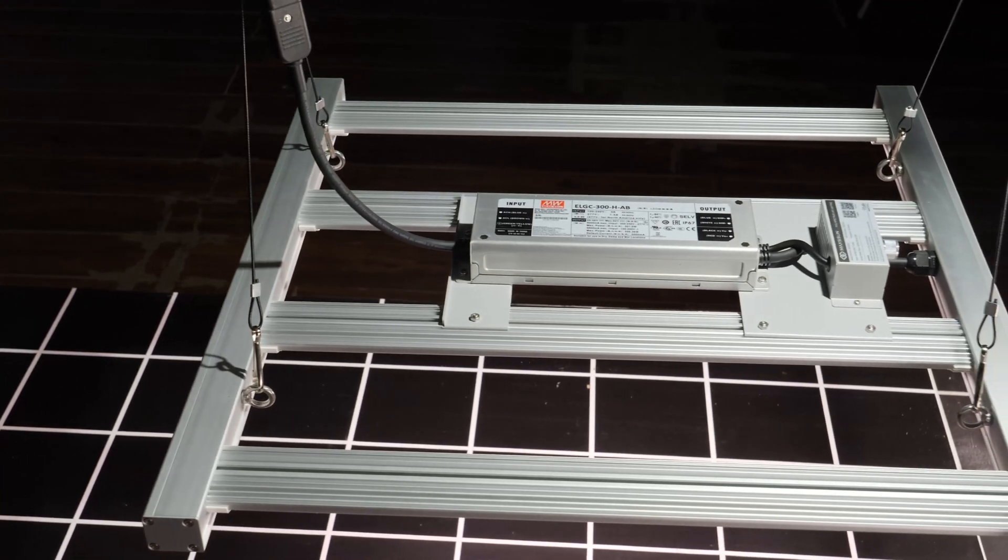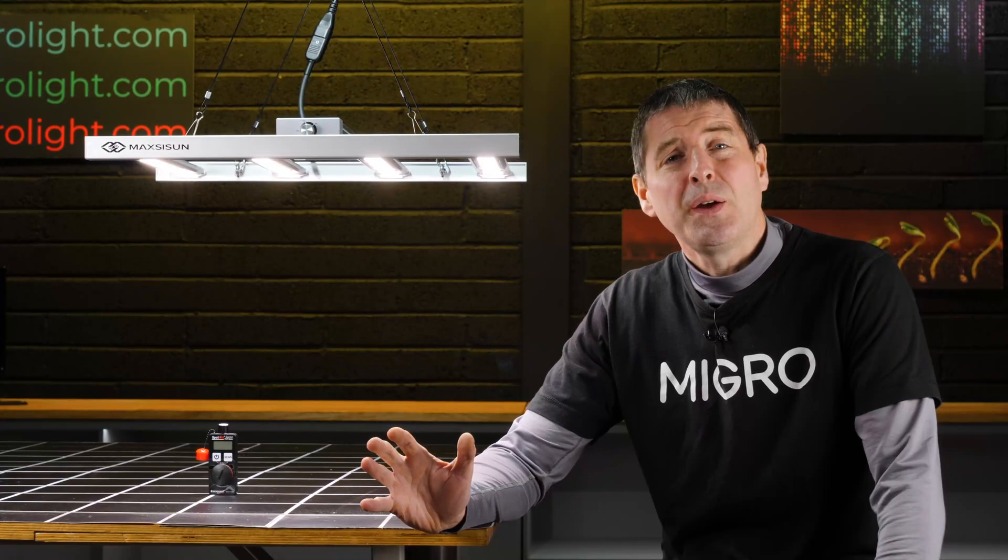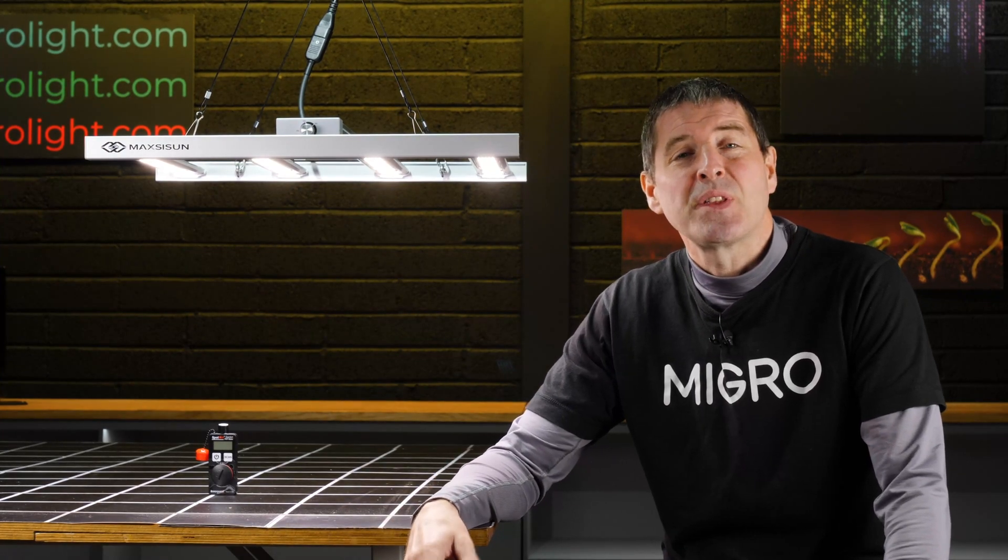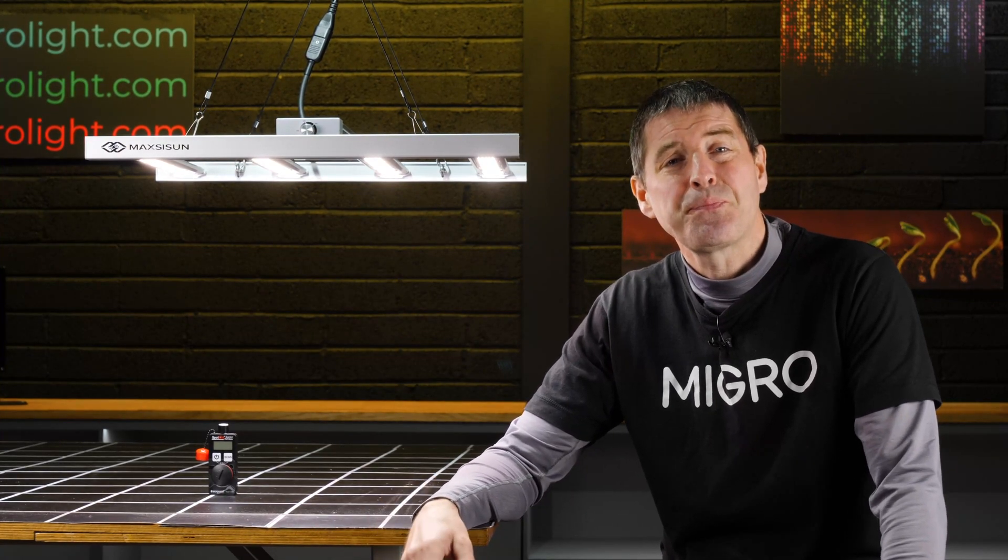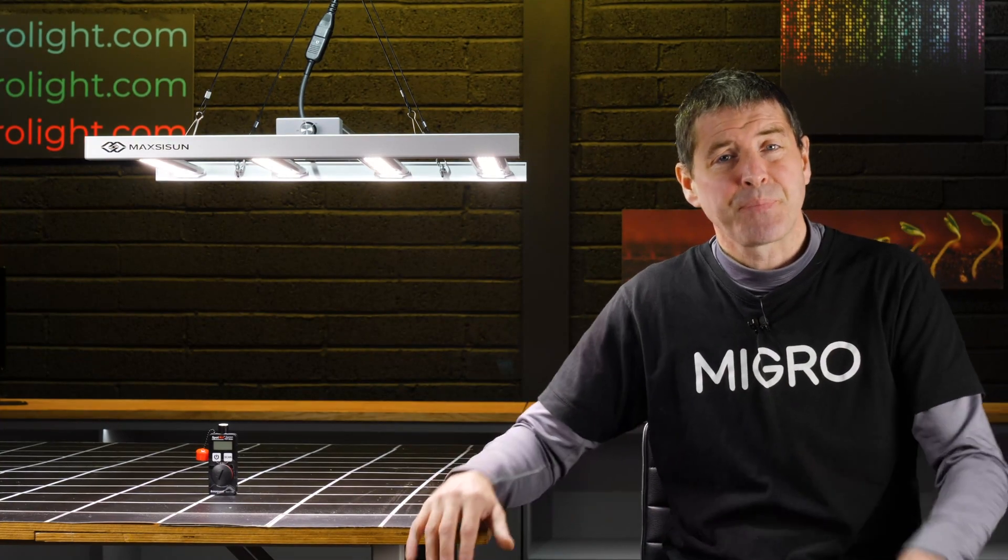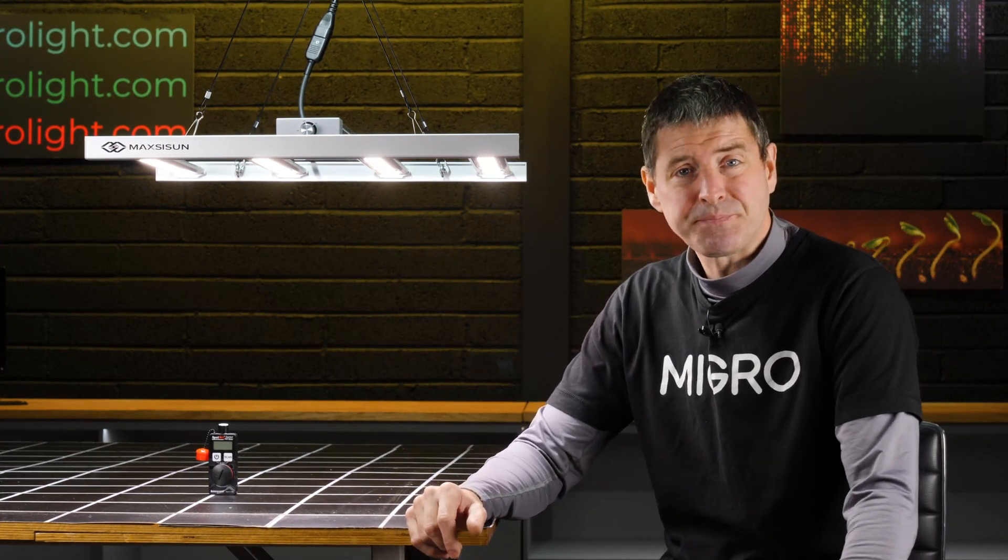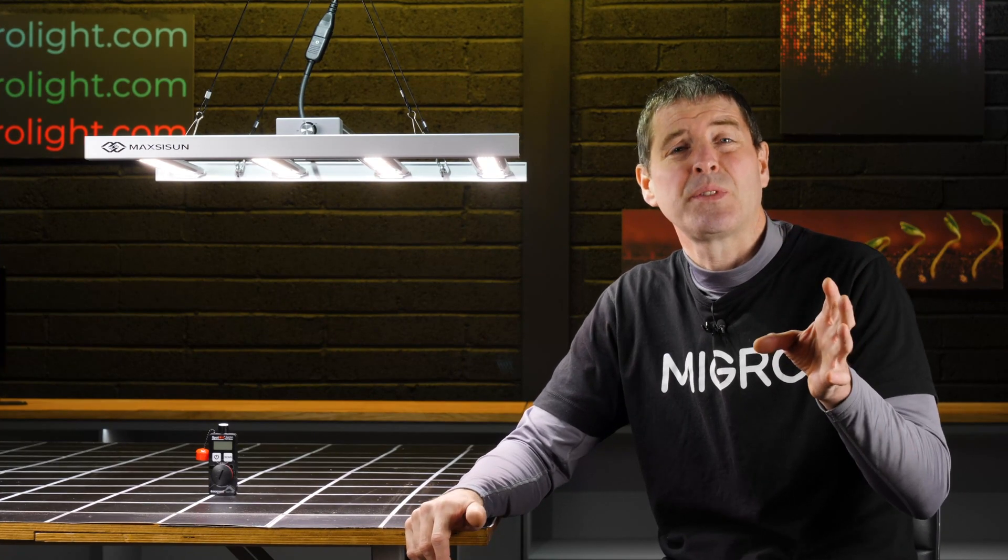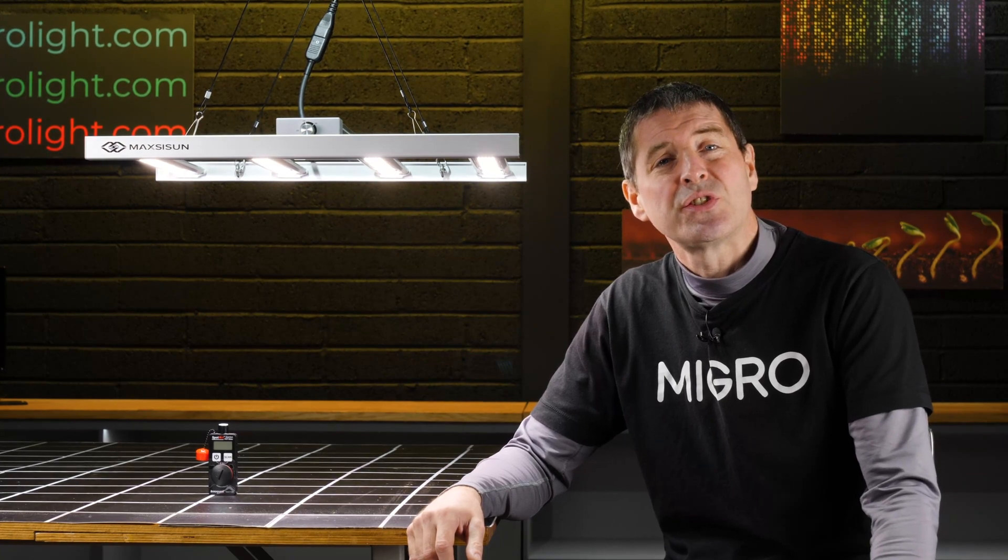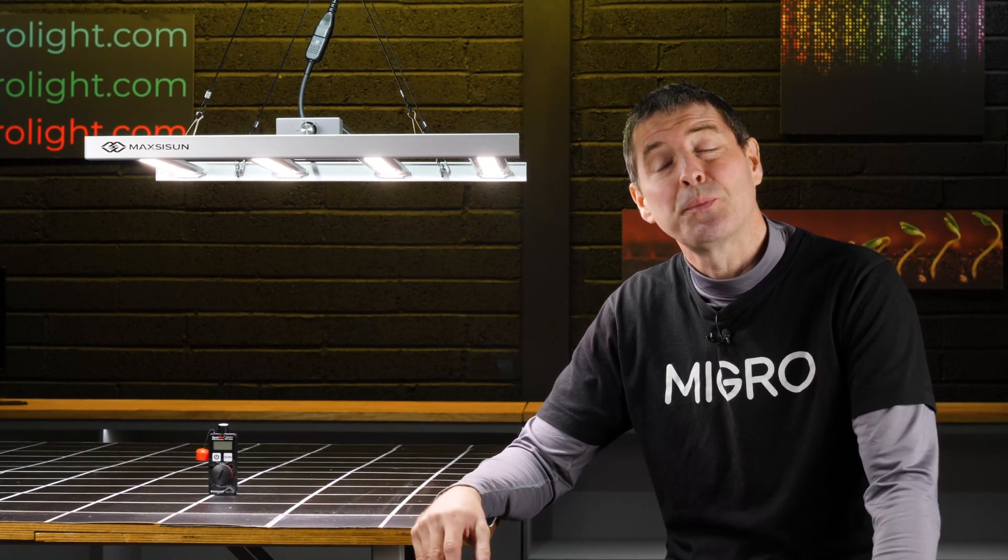They put out two lights previously that I've tested, the MF series, the MF 1000 and 2000, which are the quantum board style lights with the aluminum reflector. The thing that makes them stand out is really the quality of the build and construction as well as good performance and very good price.